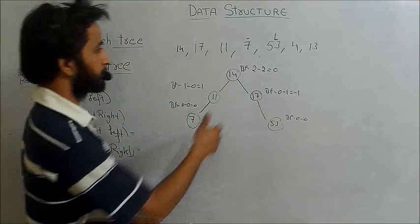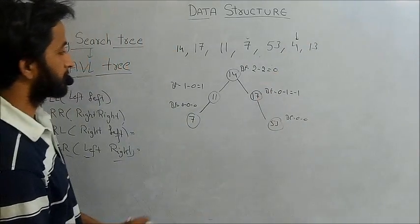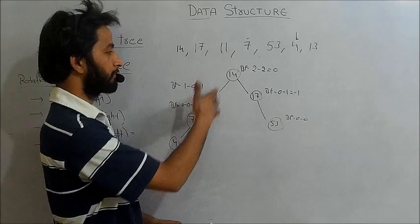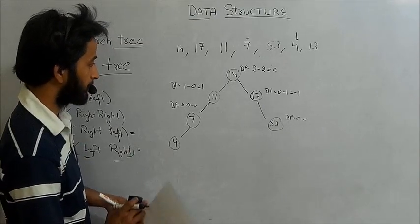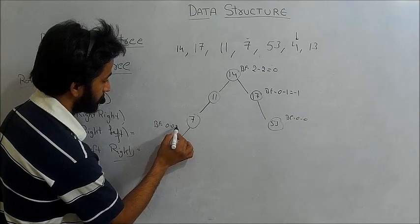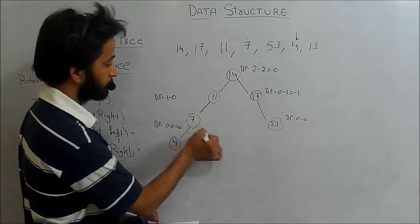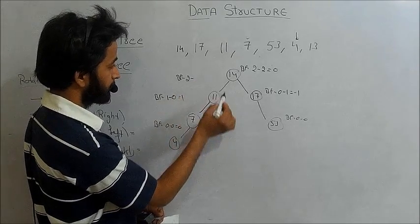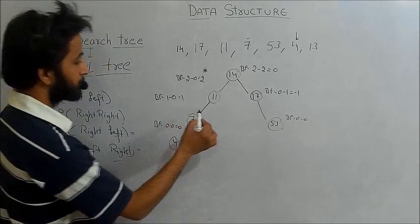The next element is 4, which is inserted to the left of 7, since 4 is less than 7, less than 11, and less than 14. After inserting 4, the balance factor at node 4 is zero, at node 7 it is one minus zero which is one, but at node 11 the balance factor is two minus zero which is two. This is a problem.